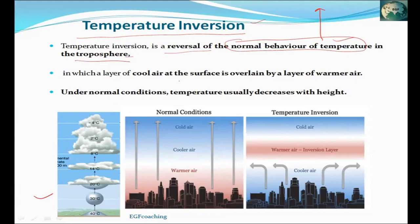In this example, we can see that the air is 40 degrees Celsius at the surface, then 20, then 14, then 8, then 2, then minus. So this is the normal condition — temperature decreases with altitude.